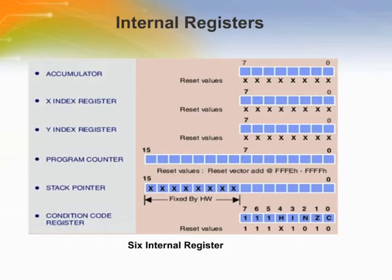The core has six internal registers. They do not have memory addresses and can be reached only with specific instructions. The reset value of the program counter is two bytes located at address FFFE and FFFF hexadecimal — that is the reset vector.